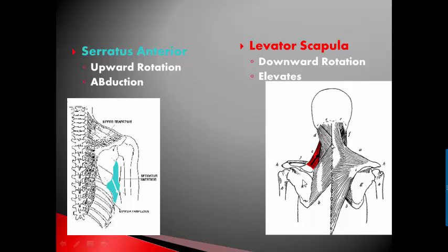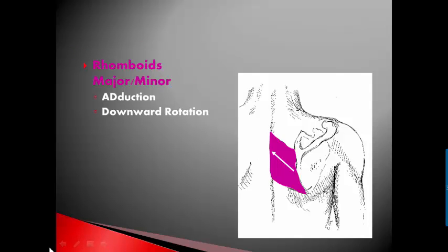Levator scapula, since it's pulling on just the upper tip of the scapula, pulls the glenoid fossa into downward rotation and also elevates the scapula — just as the name implies, levator scapula. Rhomboids major and minor go from your spinous processes to the medial border of the scapula. They're at an angle, so not only do they adduct or retract the scapula, they also contribute to downward rotation.